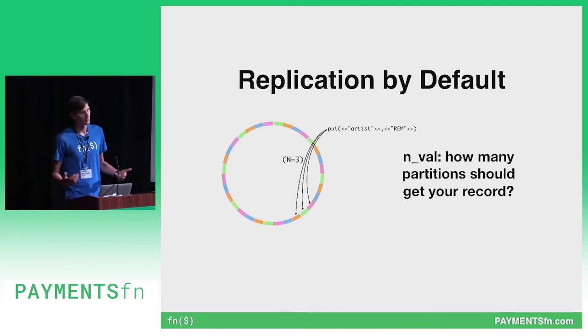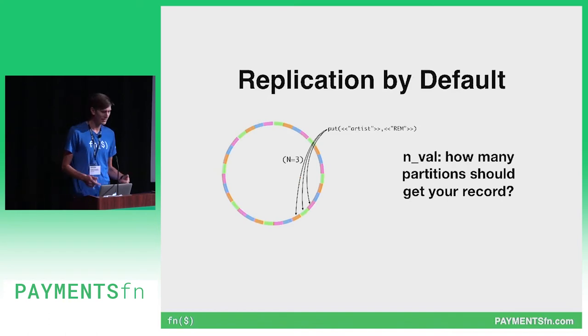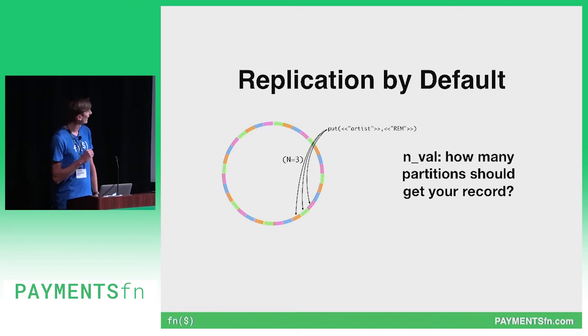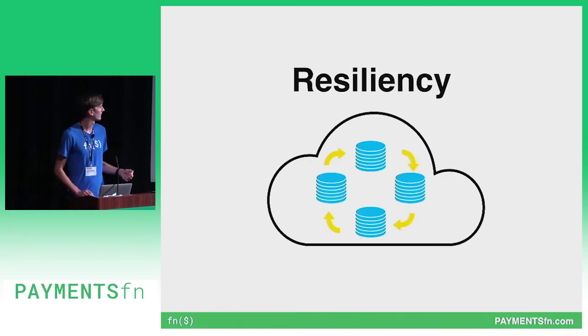What's happening with your data behind the scenes? By default, the default value is to replicate each piece of data that we store three times, and that ensures resiliency throughout the cluster.